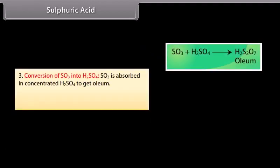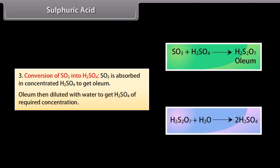Conversion of SO3 into H2SO4: SO3 is absorbed in concentrated H2SO4 to get oleum. Oleum then is diluted with water to get H2SO4 of required concentration.